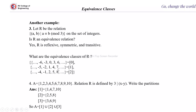For 1, the equivalence class contains 1, 4 (1+3), −2 (1−3), 7 (4+3), and so on in both the positive and negative directions. For 2, it contains 2, 5 (2+3), −1 (2−3), 8 (5+3), and likewise on both sides. So these are the equivalence classes of R.